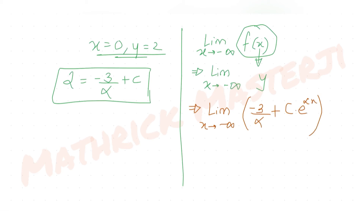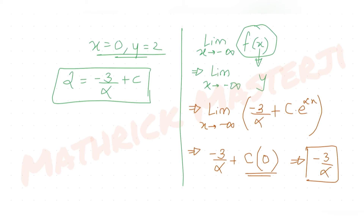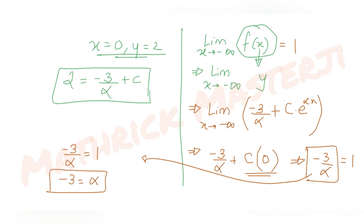So the limit equals −3/α. Since this limit equals 1, we get −3/α = 1, which gives α = −3.